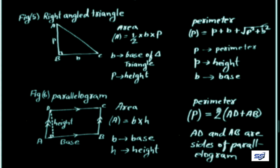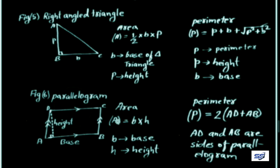To find the perimeter of the parallelogram: P = 2(AD + AB), where AB and AD are the sides of the parallelogram. Any two adjacent sides are used in the perimeter formula.